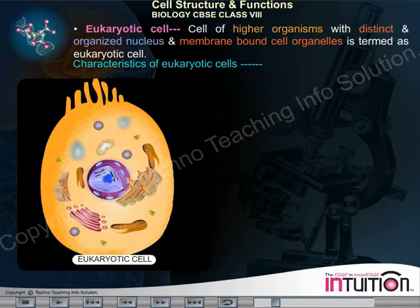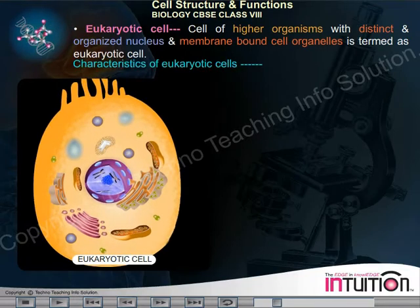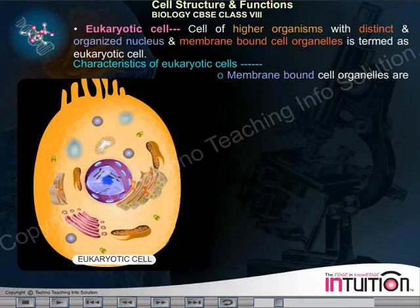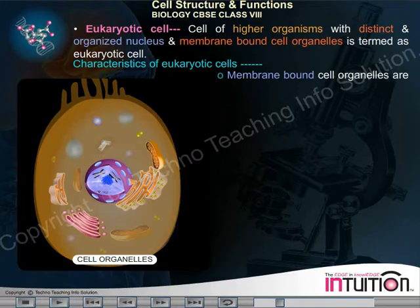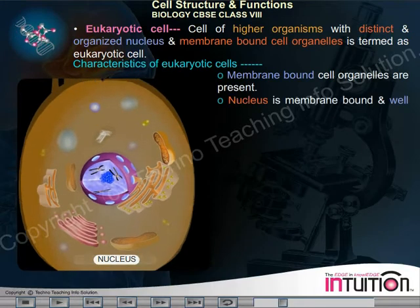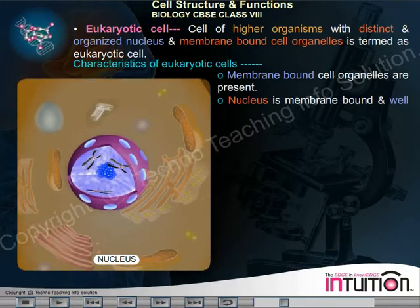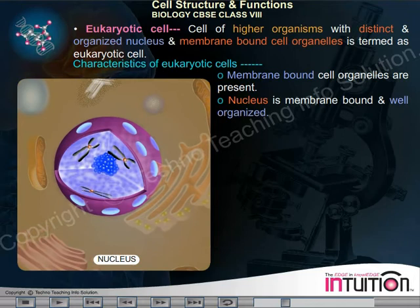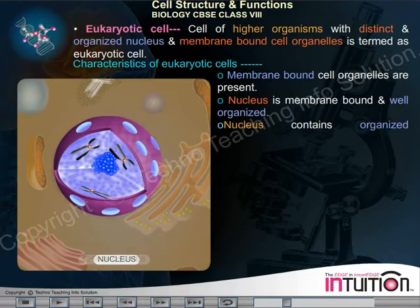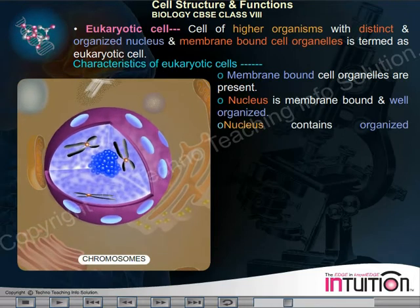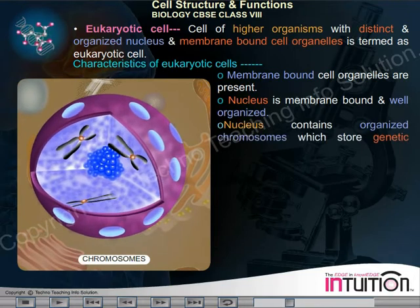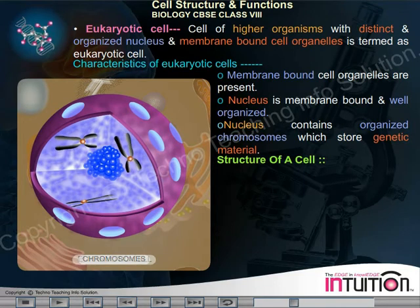Characteristics of eukaryotic cells: membrane-bound cell organelles are present, the nucleus is membrane-bound and well-organized, and the nucleus contains organized chromosomes which store genetic material.